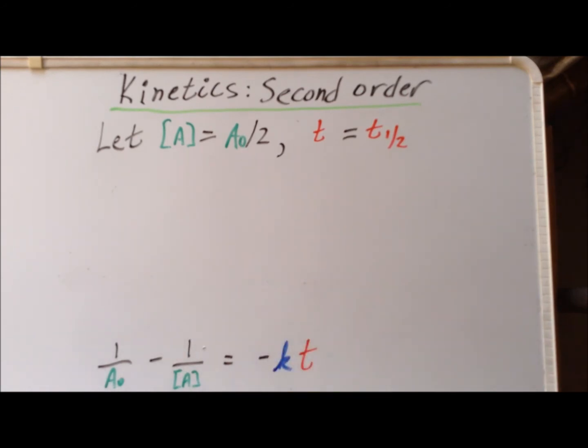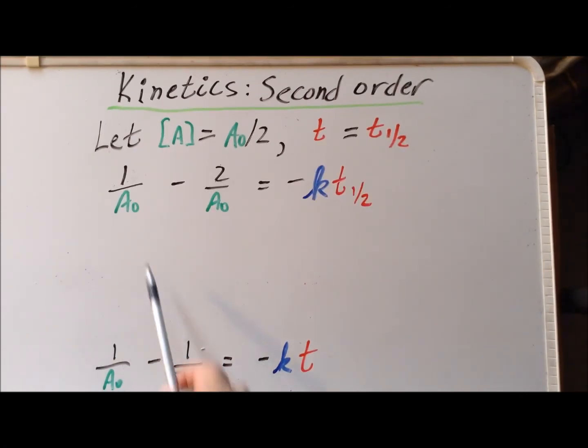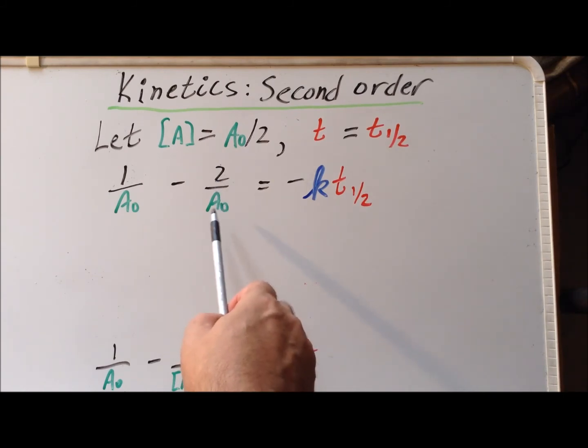If we substitute these values into our integrated form of the rate law, making those substitutions, we get 1/A₀, that's unchanged, and we get minus 2/A₀. That's 1 over A₀/2 gives us 2/A₀. Equals -kt₁/₂.